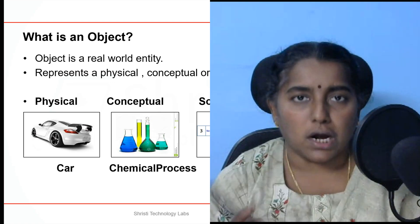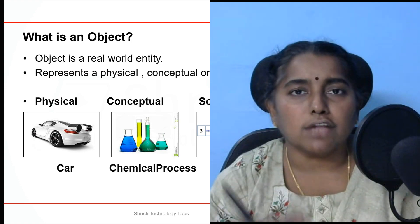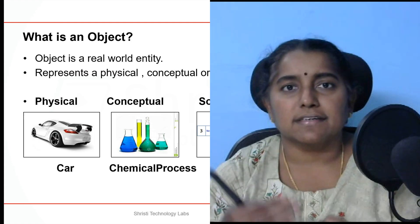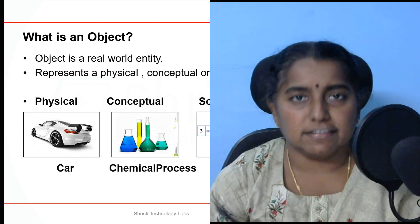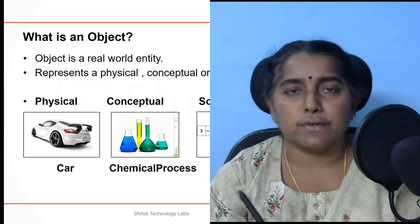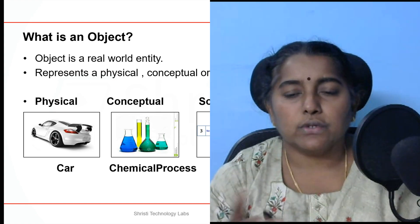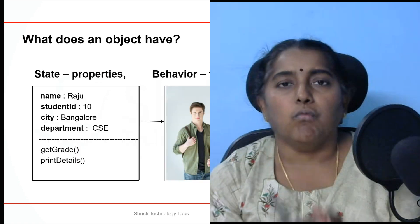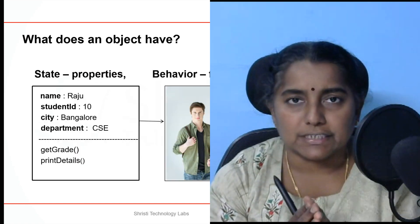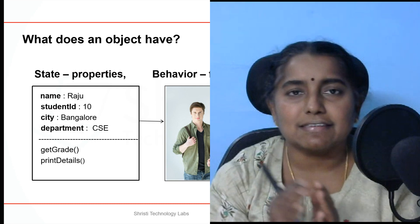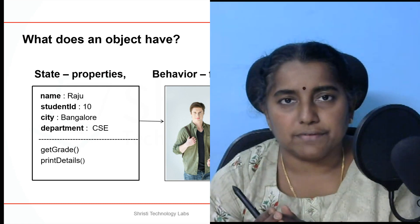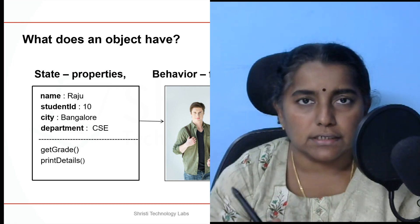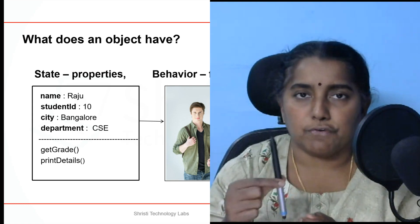You can just go on. In case of a conceptual entity, it can be a chemical process, billing, order, history. And in case of a software entity, it can be linked list, array list, and so on. What does an object have? An object has state and behavior. By state, we talk about the properties of an object. Say for example,